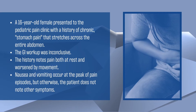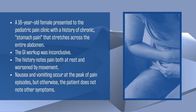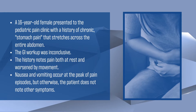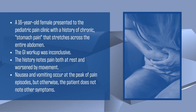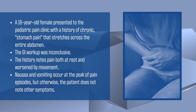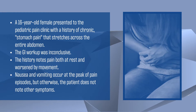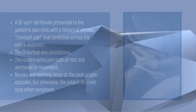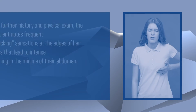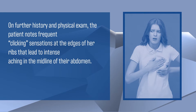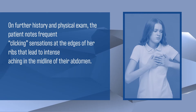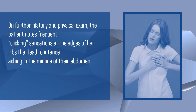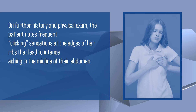A 16-year-old female with chronic abdominal pain — despite thorough gastroenterology investigations, the cause remains elusive. Her pain is constant, worsened by movement, and accompanied by nausea and vomiting. On further history and physical exam, the patient notes frequent clicking sensations at the edges of her ribs that lead to intense aching in the midline of her abdomen.